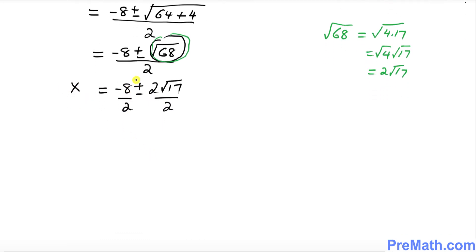2 goes into 8 four times, so I can write this as -4 plus minus, this 2 and 2 cancels out, we got square root of 17.